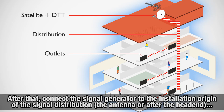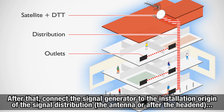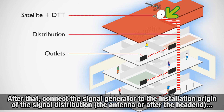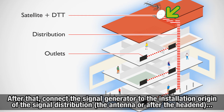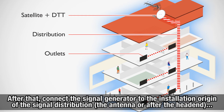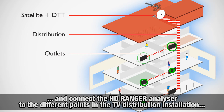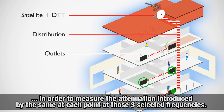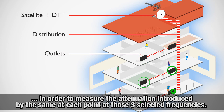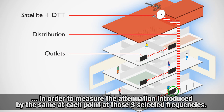After that, we will connect the signal generator where the origin of the signal distribution is in the installation — that is, after the antenna or after the headend — and connect the HDRanger analyzer to the different points in the TV distribution installation in order to measure the attenuation introduced at each point at those three selected frequencies.